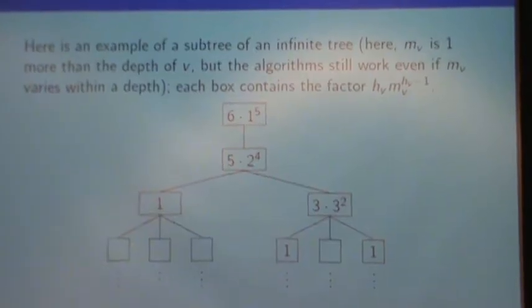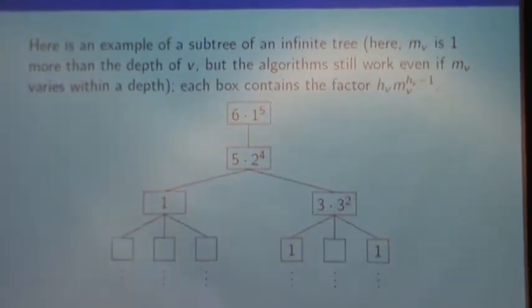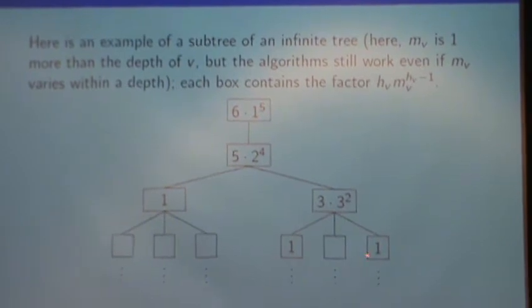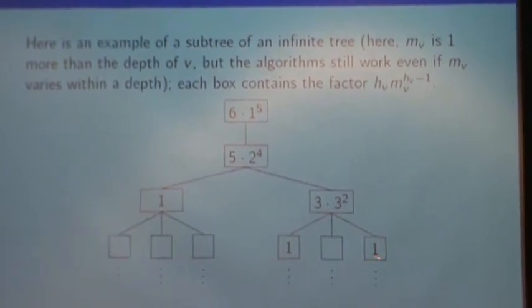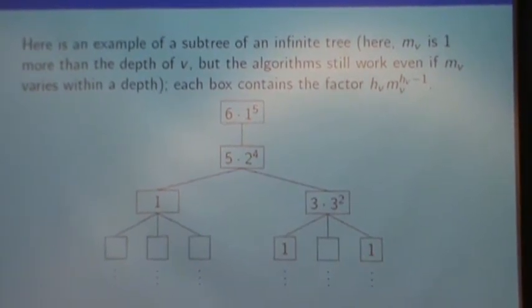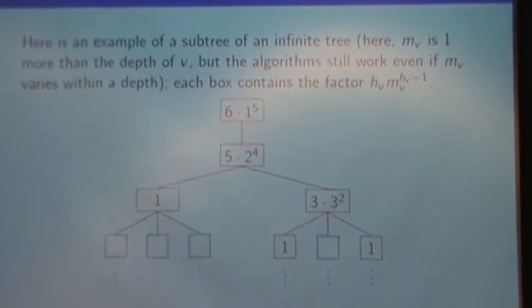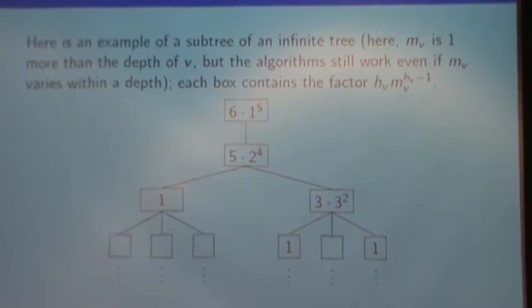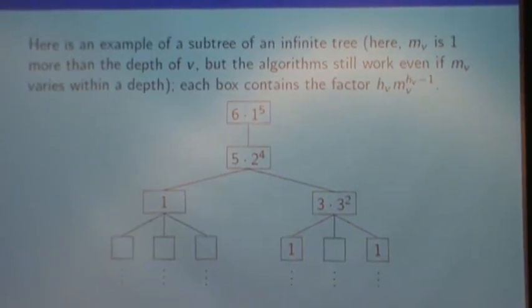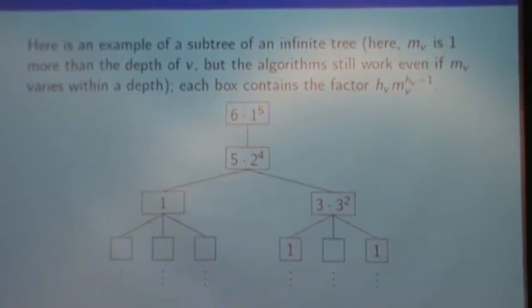Looking here, you notice that there are six vertices, there are six potential vertices, or six vertices in the infinite tree at this level. And each will have probability of 1/6 of being added, if it is possible to add that vertex at all.